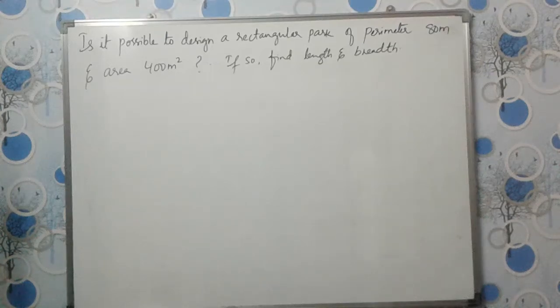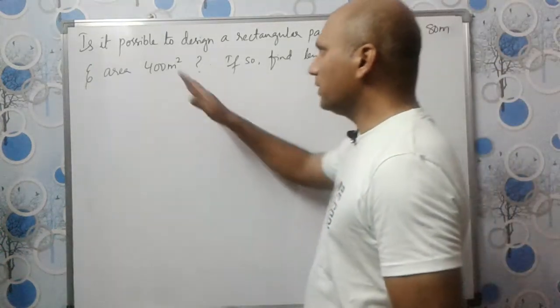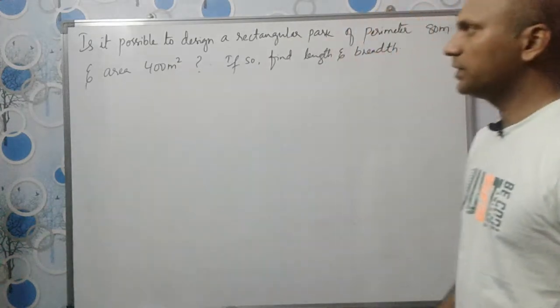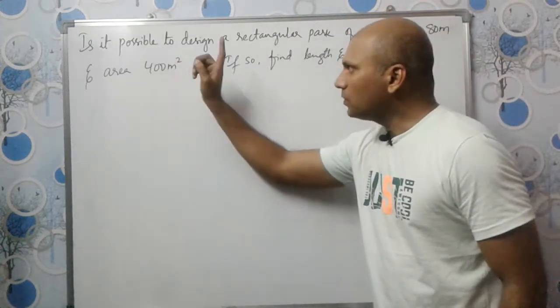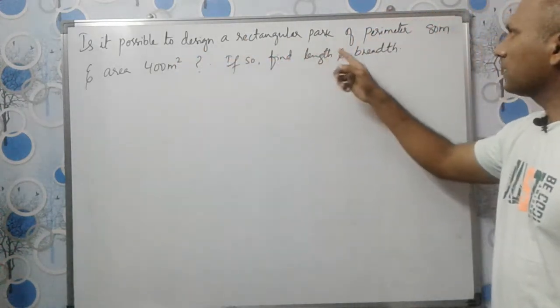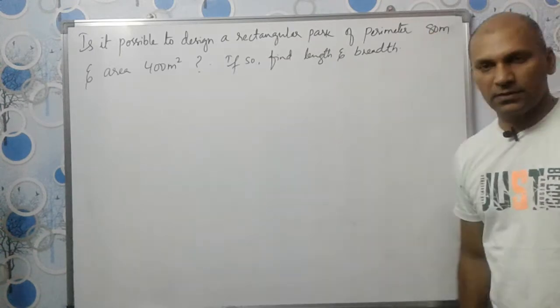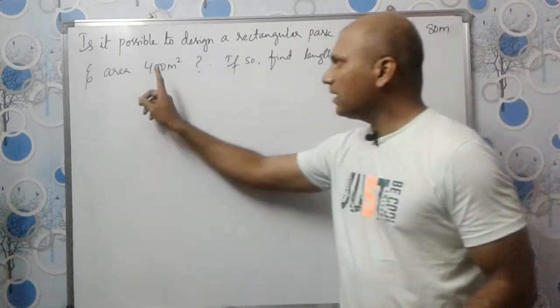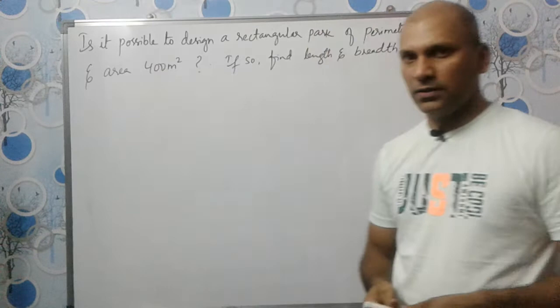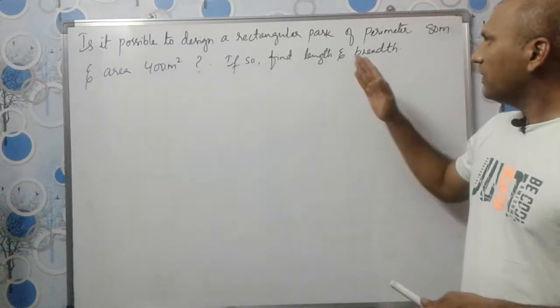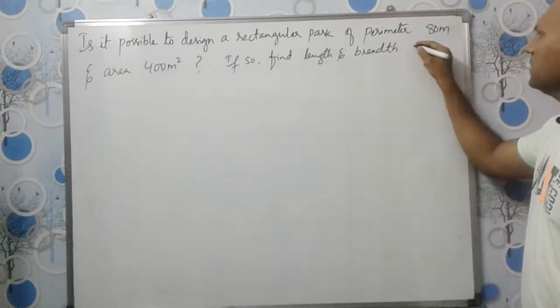Hi students, in this video we are going to solve this problem from quadratic equation. Is it possible to design a rectangular park of perimeter 80 meters and area 400 meter square? If so, find the length and breadth and comment on the answer.